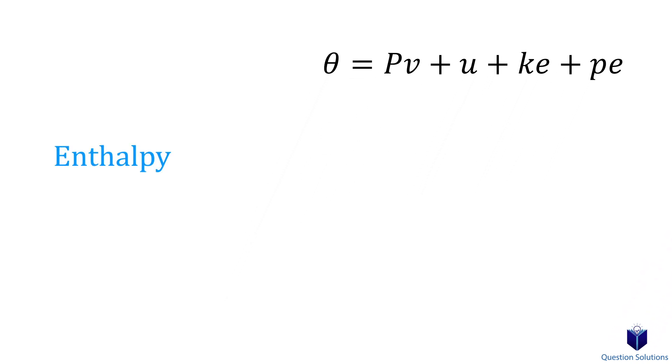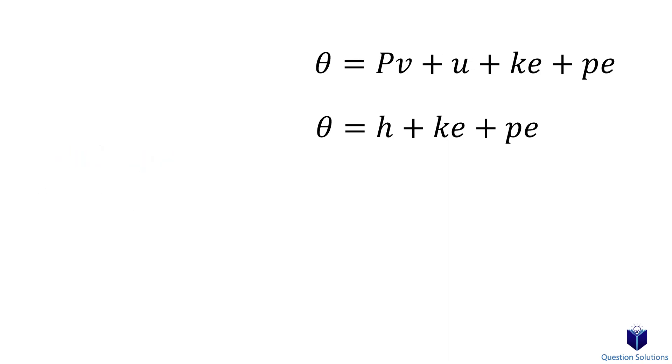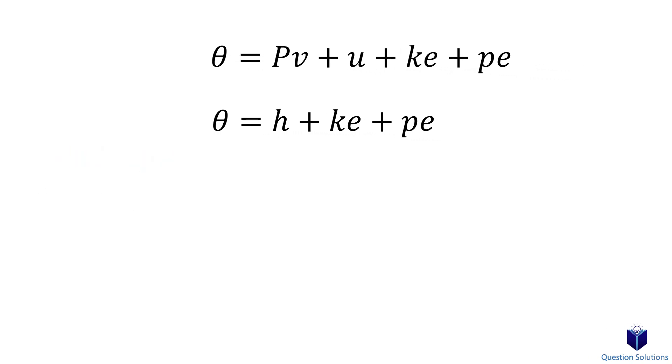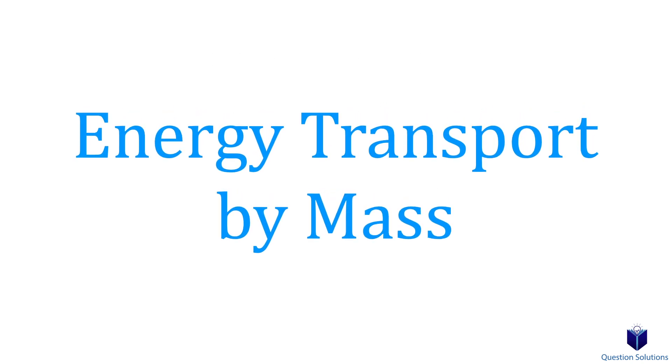Something very interesting happens when we write it like this. Remember we discussed enthalpy? The equation for enthalpy was h = u + Pv. Notice how this part is the same, so that means this part can be replaced with enthalpy. When we write it in terms of enthalpy, we don't need to worry about flow work since enthalpy takes care of it.